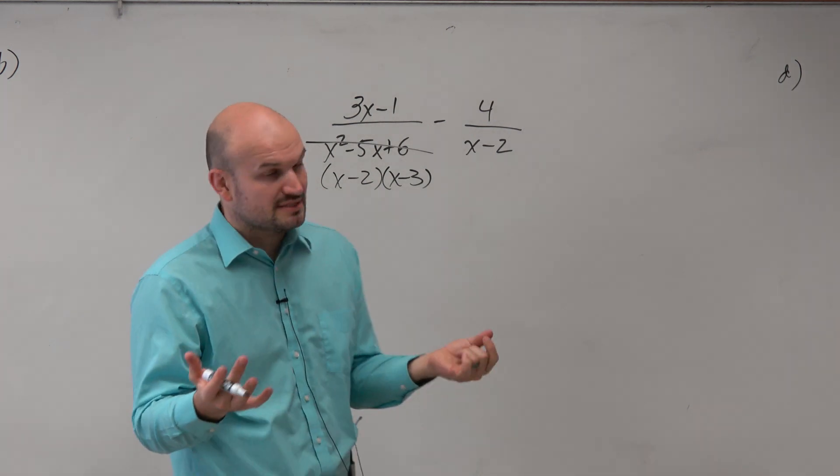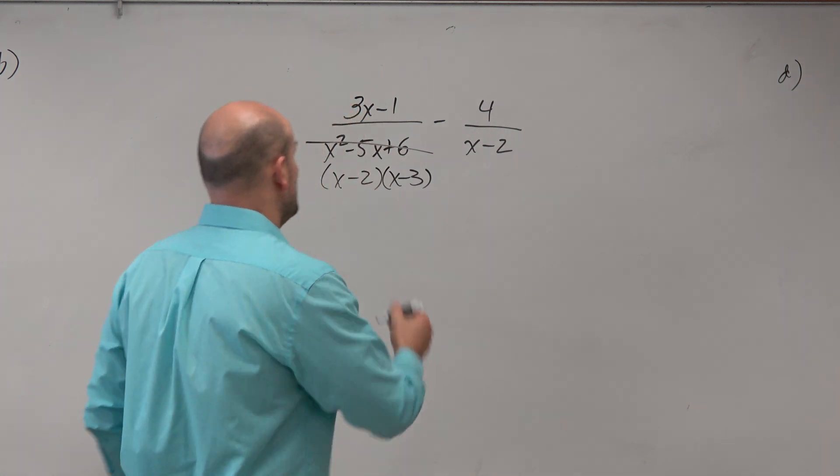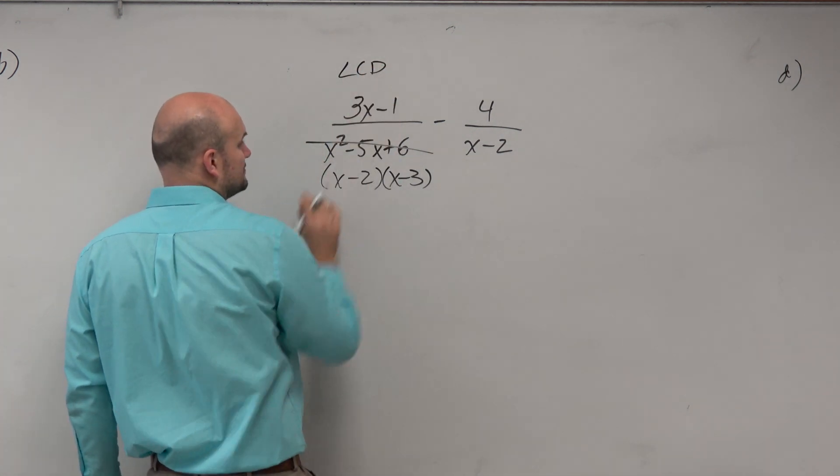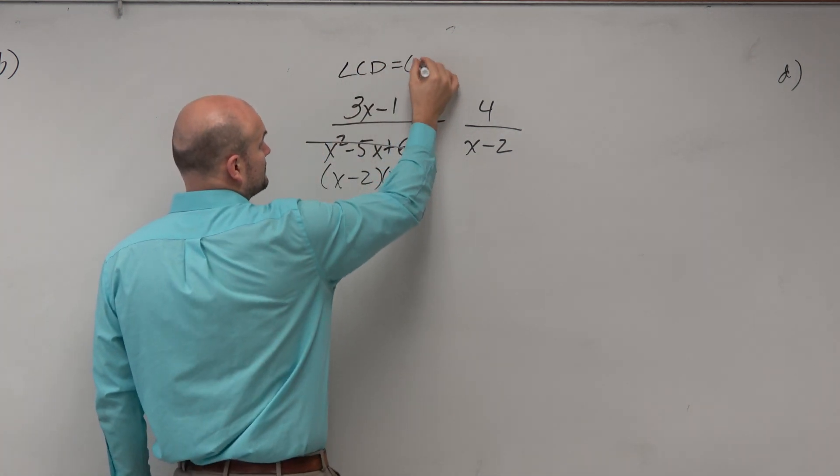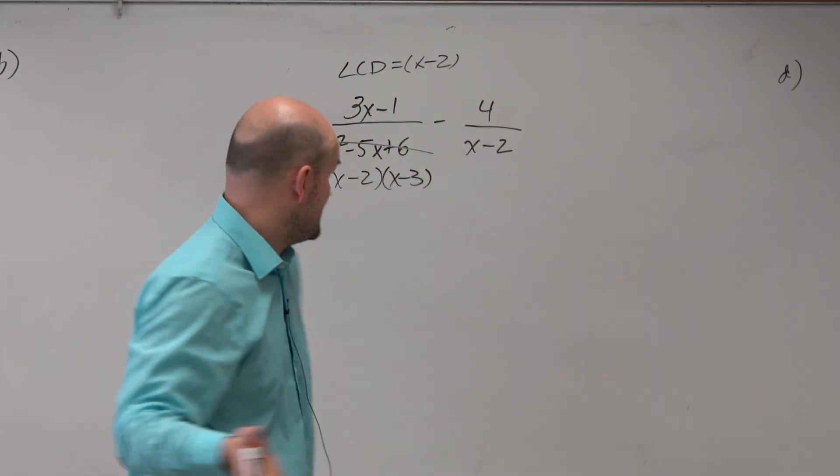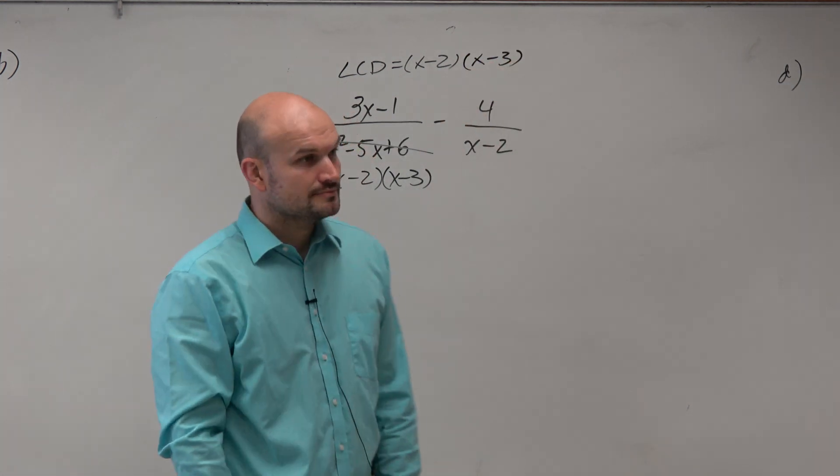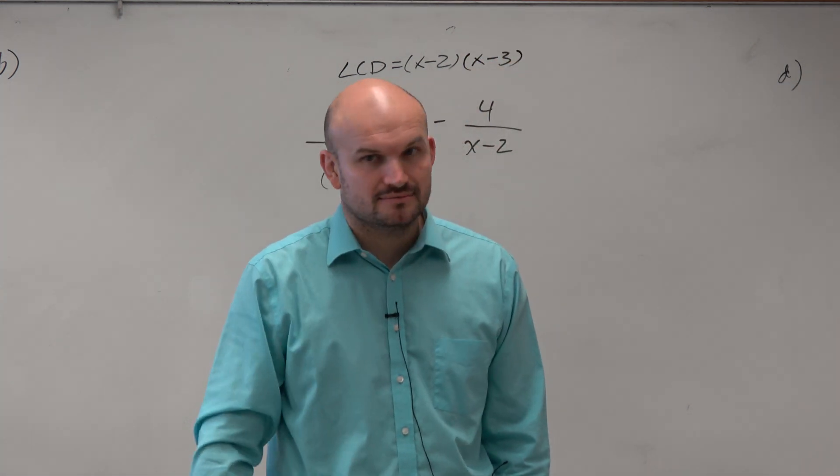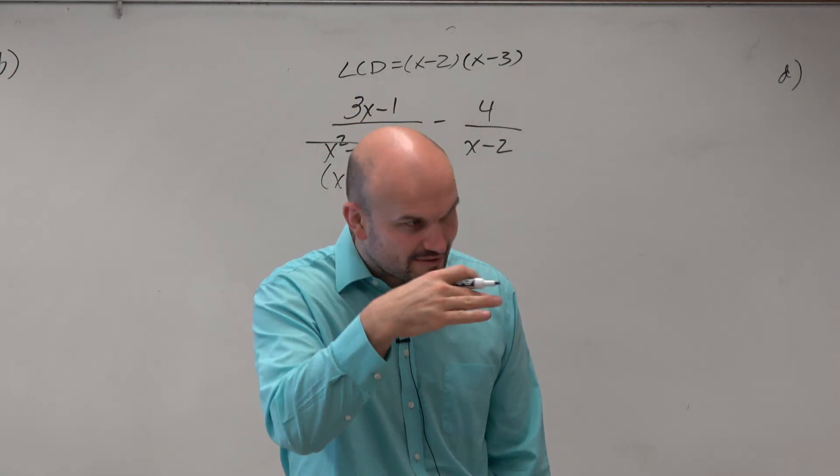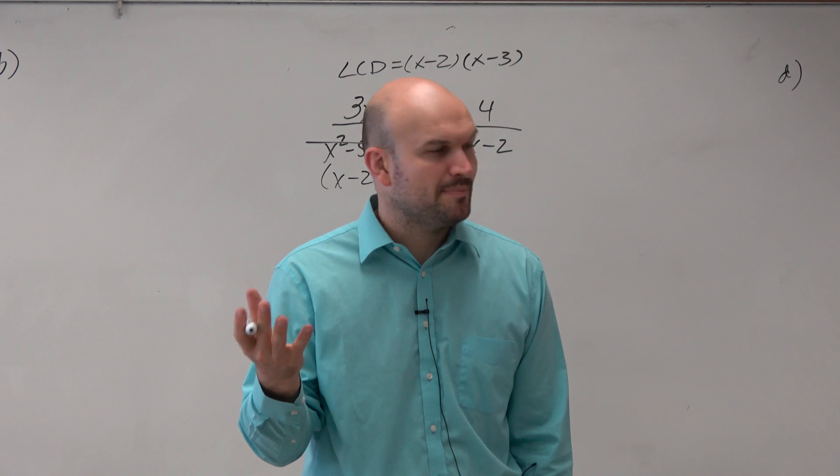So now, again, we have our denominator. And again, when we're trying to find common denominators, we want to first identify what they have in common. Well, they both share an x minus 2. So that's part of my common denominator. And then we want to include what they don't have in common, which is x minus 3. That is your common denominator. Don't need to overthink it. Don't need to write down the multiples of everything like you did with numbers, because it's too complicated to do that.